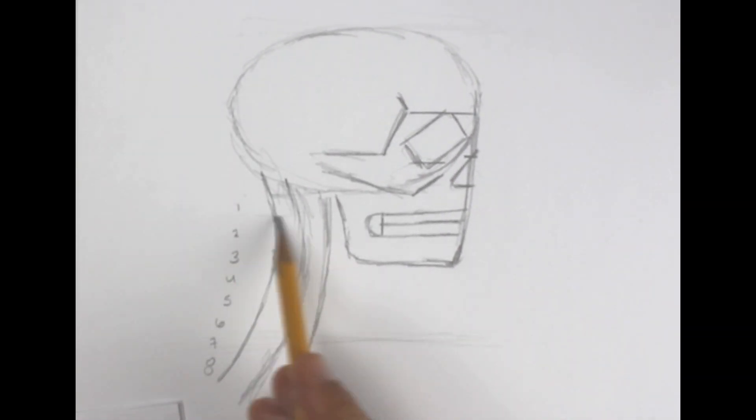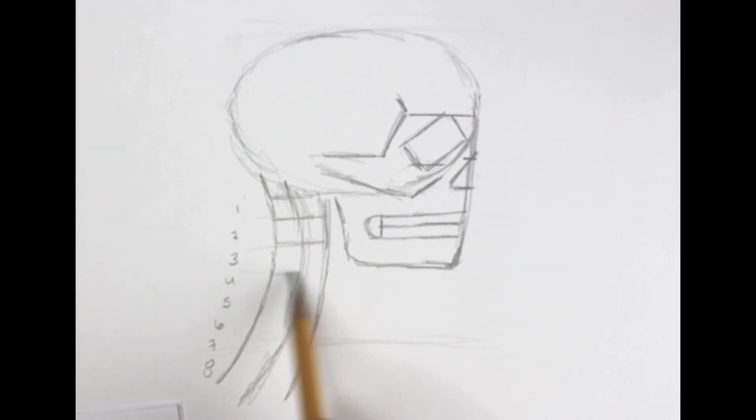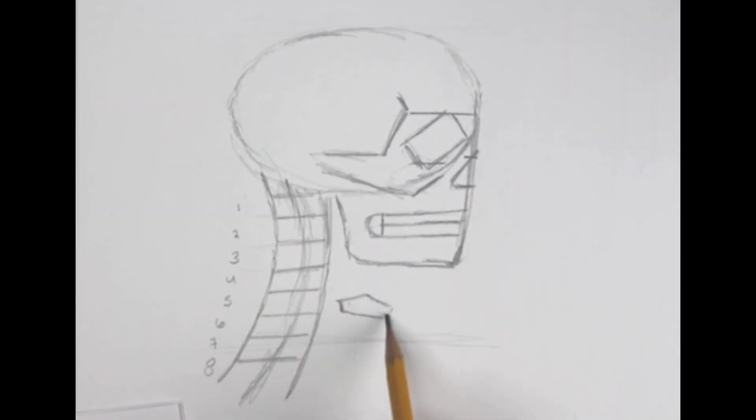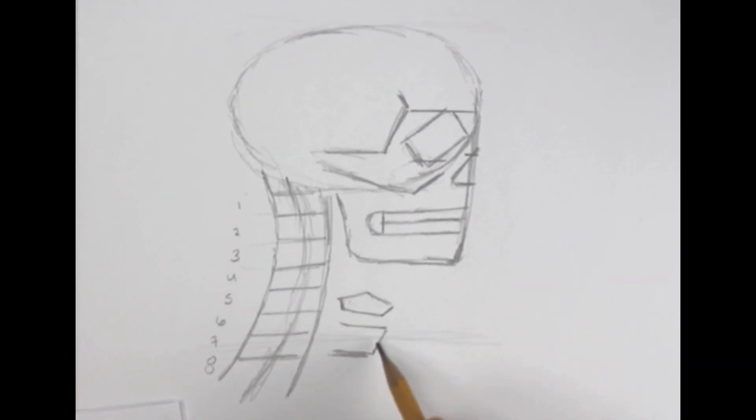Right after that you want to get everything else in place. When you're doing the lines of the neck, you want to make sure you have eight spaces. I'm not sure if that's anatomically correct but eight spaces seems to work well for me.